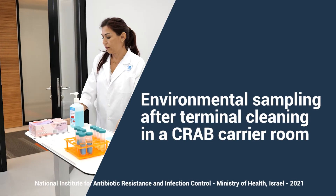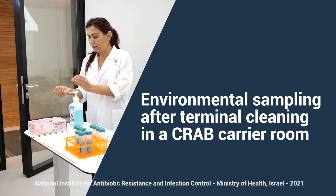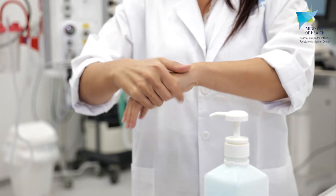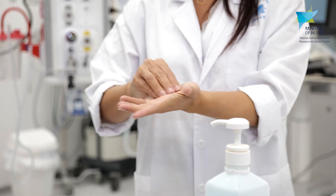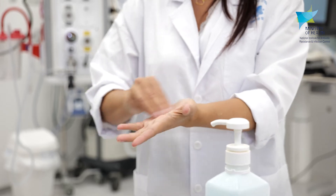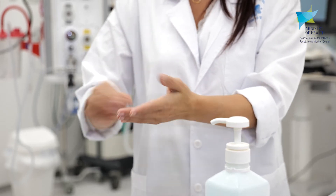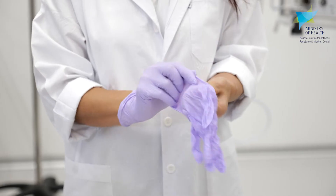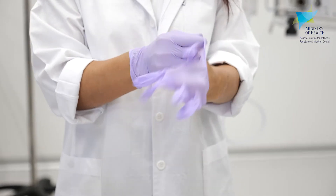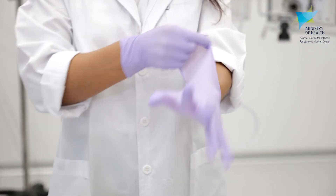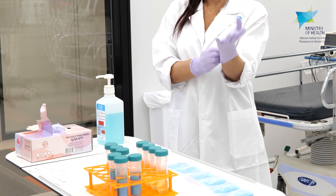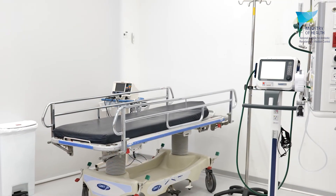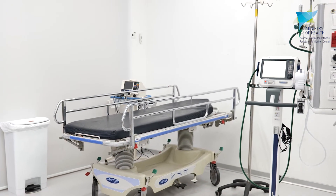Environmental sampling after terminal cleaning in a CRAB carrier room. Choosing which objects to sample depends on the reasons for sampling. For example, sampling might be performed to locate the source of an outbreak, to audit the quality of cleaning of the patient environment, equipment, and common surfaces, or to examine whether patient care is being performed according to principles of infection prevention.